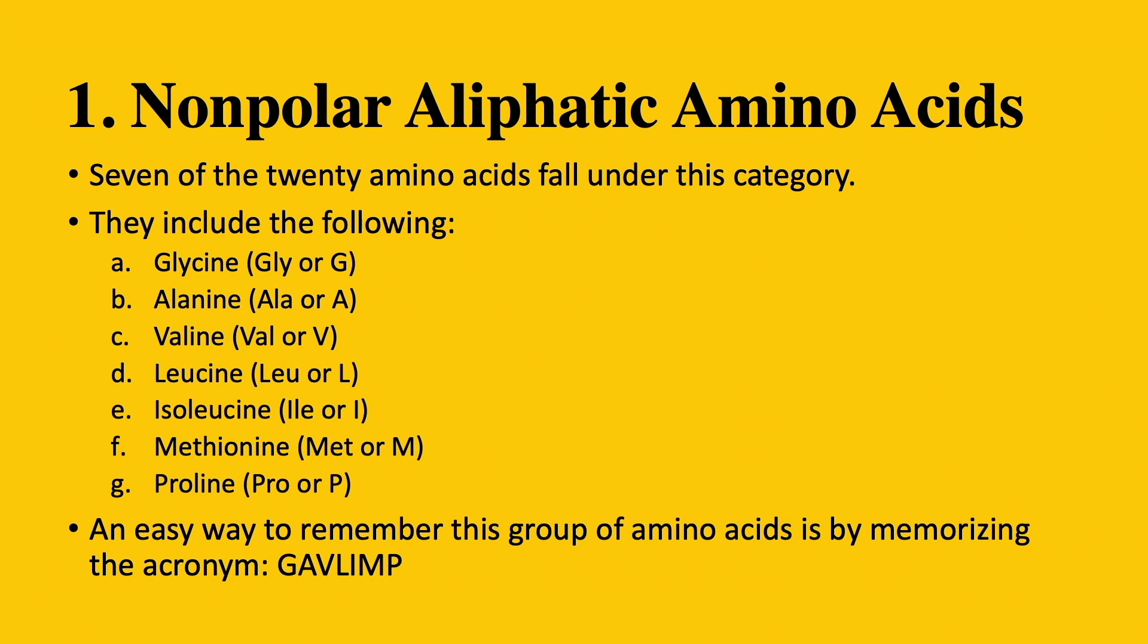They include glycine, alanine, valine, leucine, isoleucine, methionine, and proline. As I mentioned before, you really need to know the one-letter and three-letter abbreviations. An easy way to remember this group is by memorizing the acronym GAVLIMP.